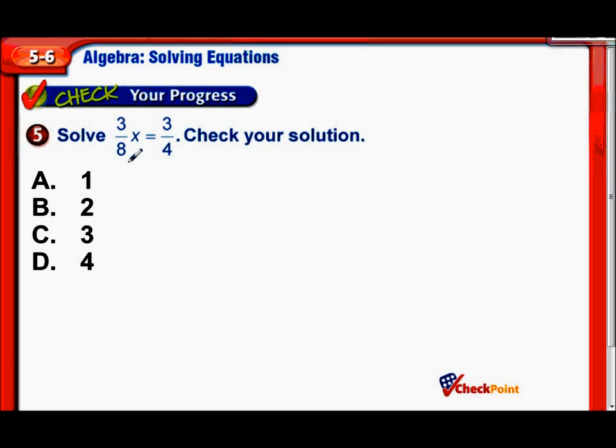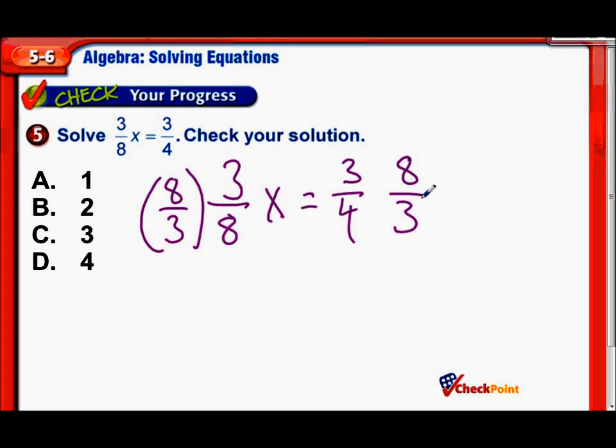3/8 x equals 3/4. We're going to multiply both sides by the multiplicative inverse, the reciprocal of 3/8. So that would be 8/3. These cancel out, they equal 1, and 1 times x is just x. Now we just have to solve this side. But do you see what I see? We can actually do some cross-cancelling here.